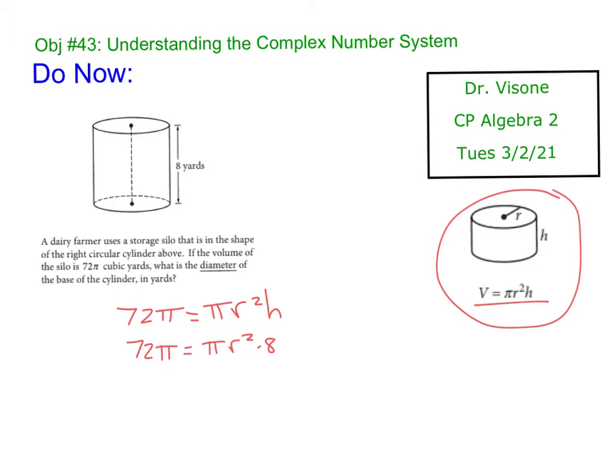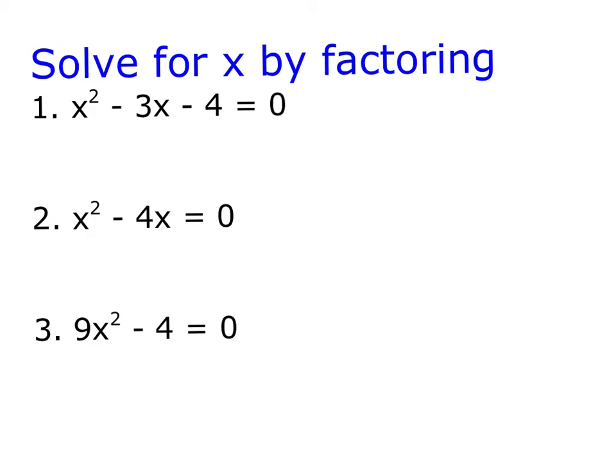We can divide both sides by 8. 9π equals πr². We can divide by π. So r² equals 9, which means r equals 3. What's the question though? What is the diameter? So if the radius is 3, the diameter is 6. Remember radius is from the center out. The diameter is the entire thing.